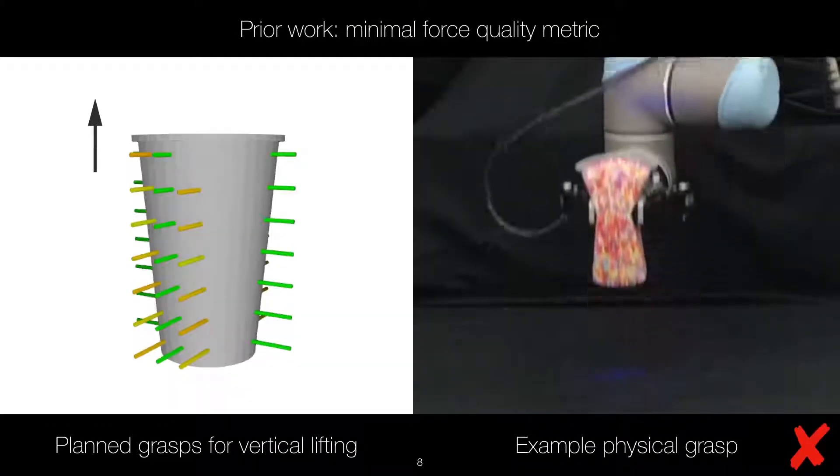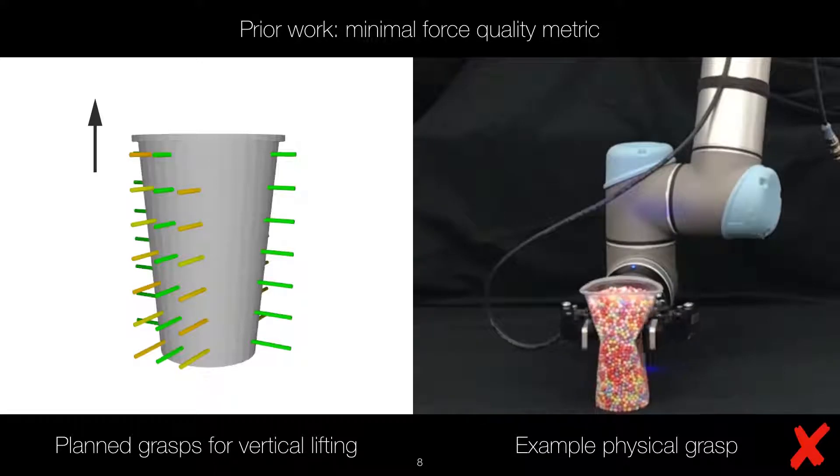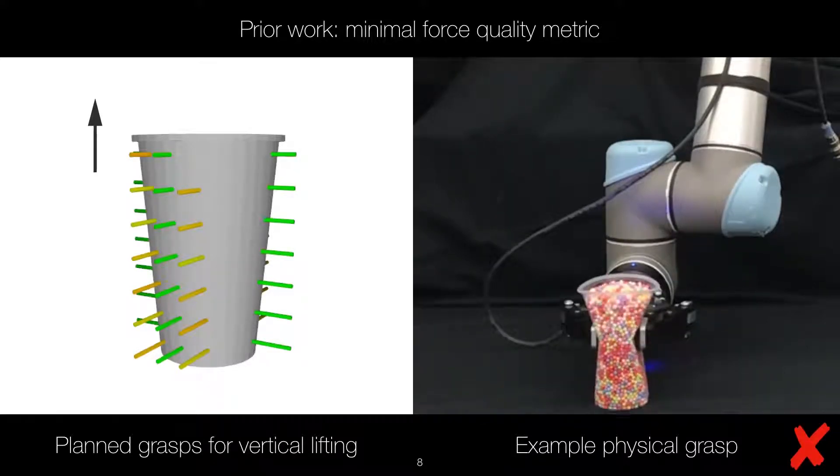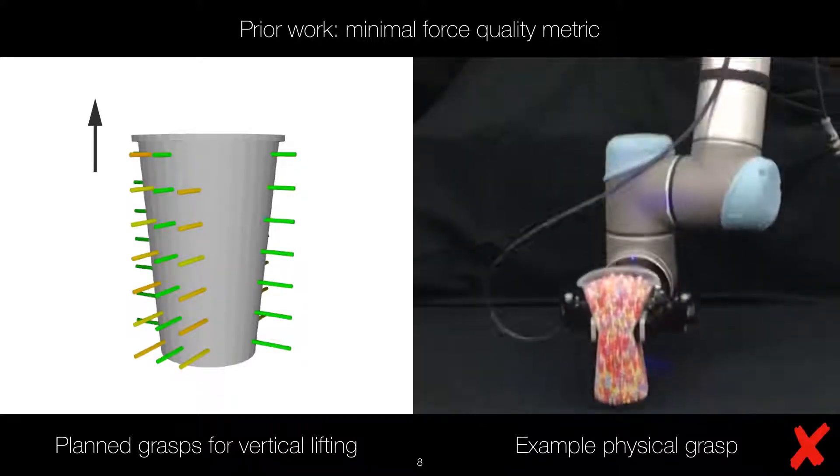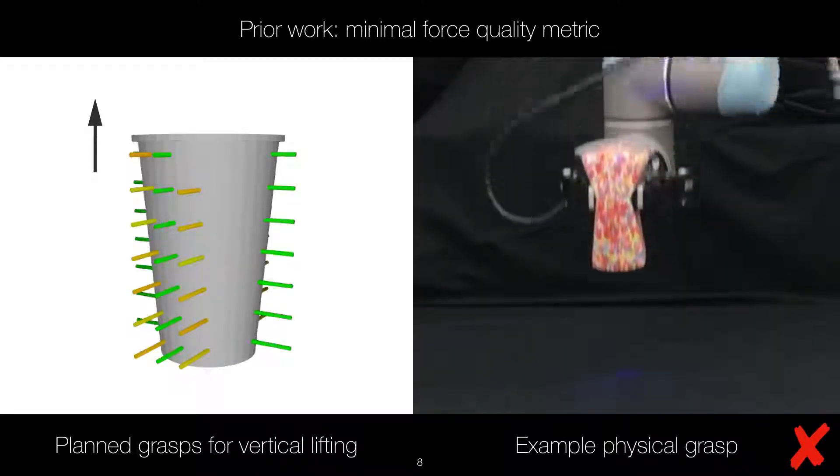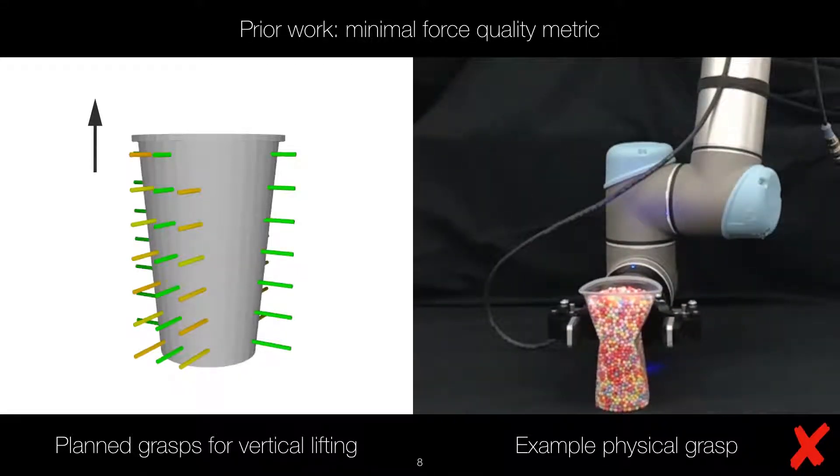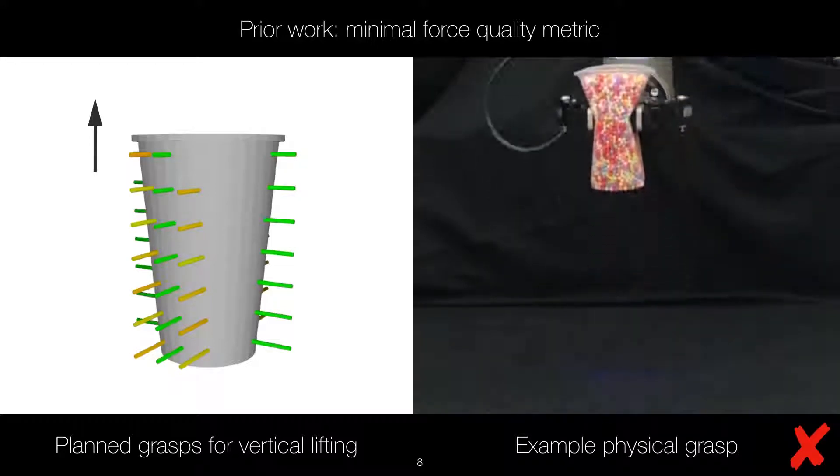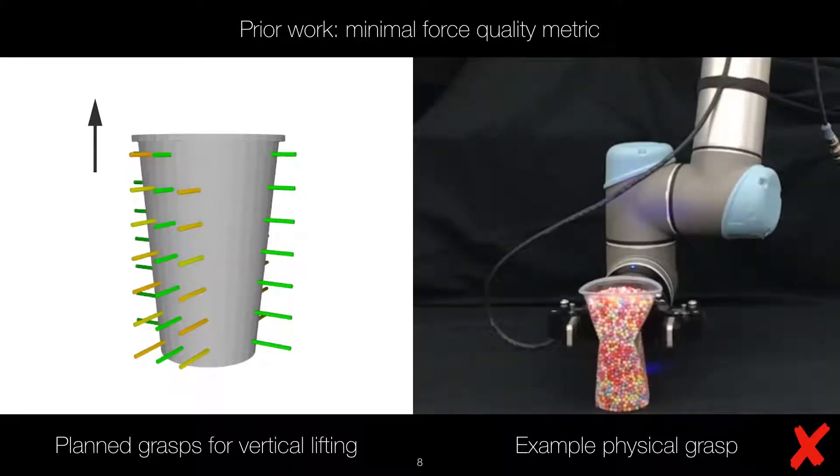We sample antipodal grasp candidates and compute grasp quality for two manipulation tasks. We compare the proposed metric with the minimum force grasp quality metric, which is widely used to manipulate deformable objects.